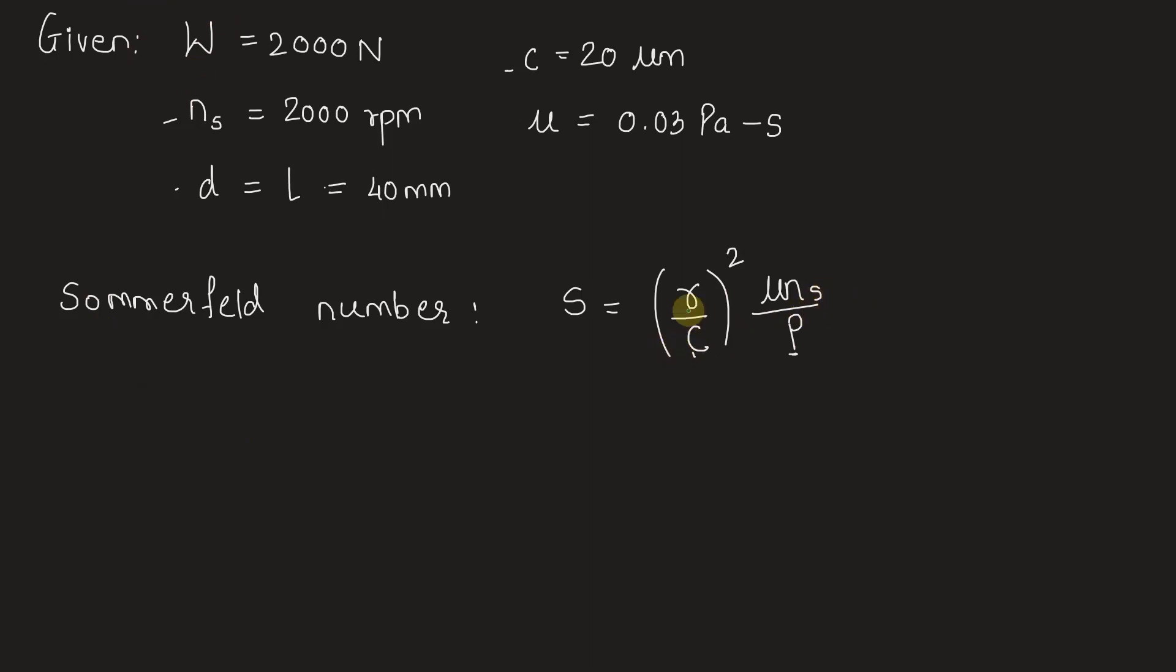let's find it out. Units of each of these quantities are very important. Of course, radius and clearance should be in the same unit. We're going to find unit bearing pressure P by substituting load per unit area. The area on which the load is acting is diameter times length, so this equals 2000 Newton divided by 40